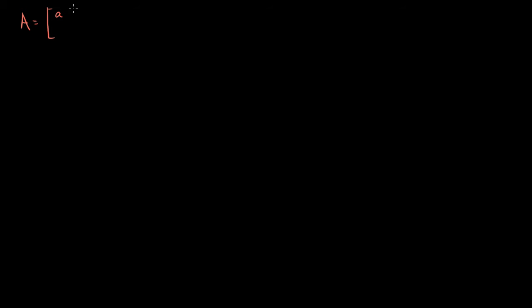I've got a 2 by 2 matrix here. Let's say A is equal to A, B, C, D. I'm going to keep it really general, so this is really any 2 by 2 matrix. What I want to do is use our technique for finding an inverse of a matrix to essentially find a formula for the inverse of a 2 by 2 matrix — to find A inverse using a formula that applies to this matrix.